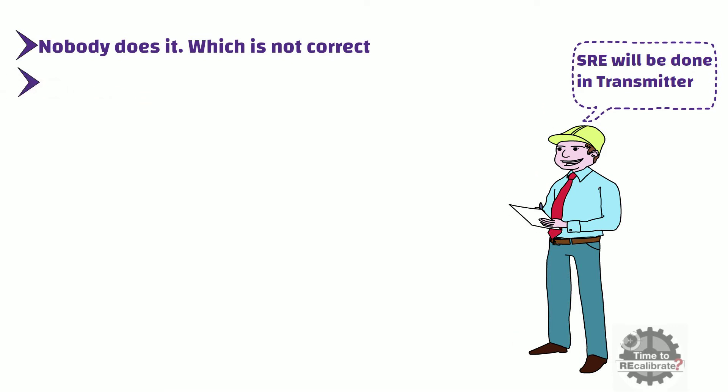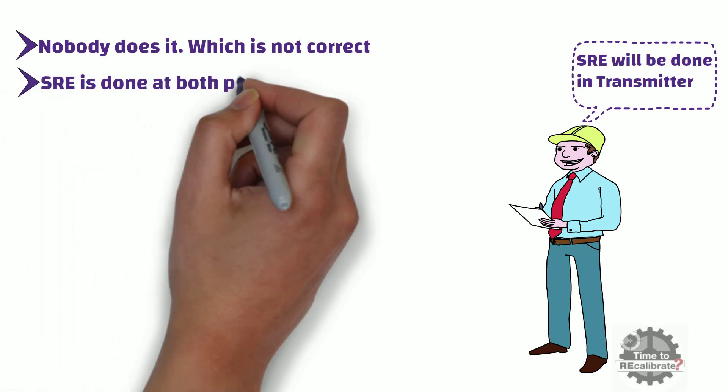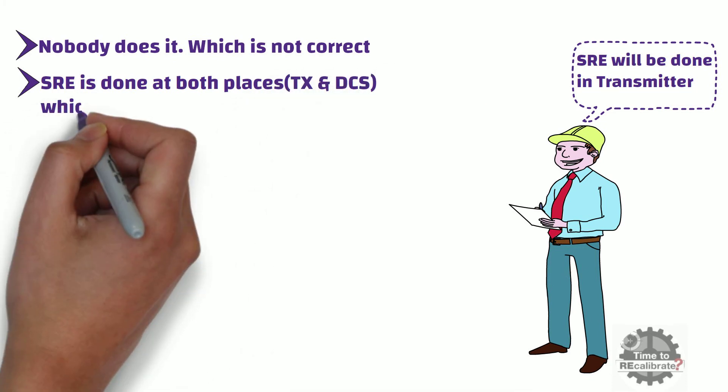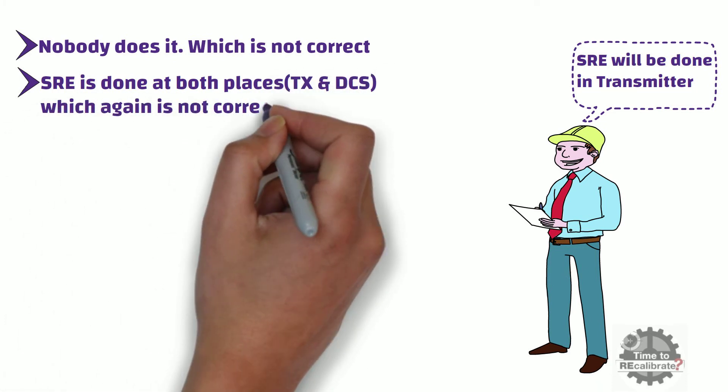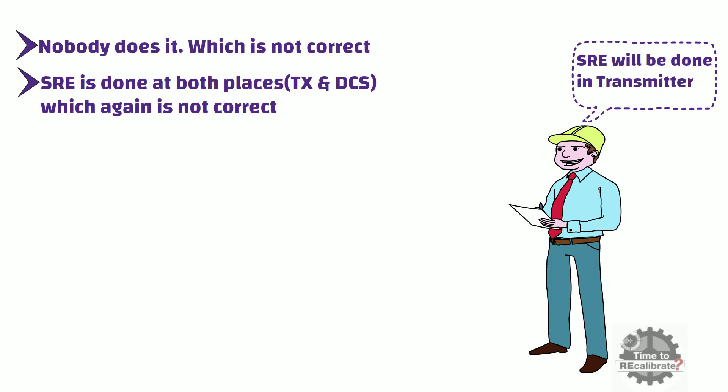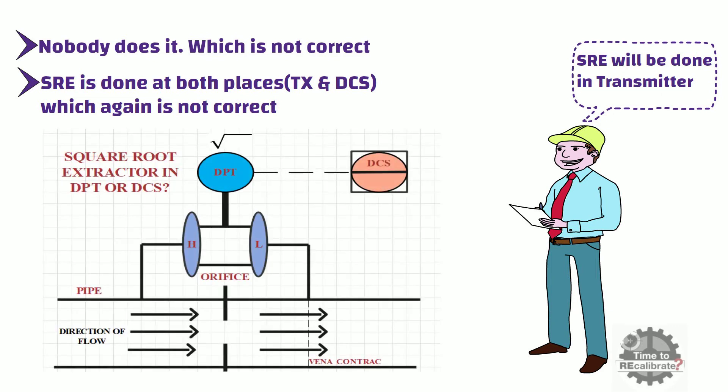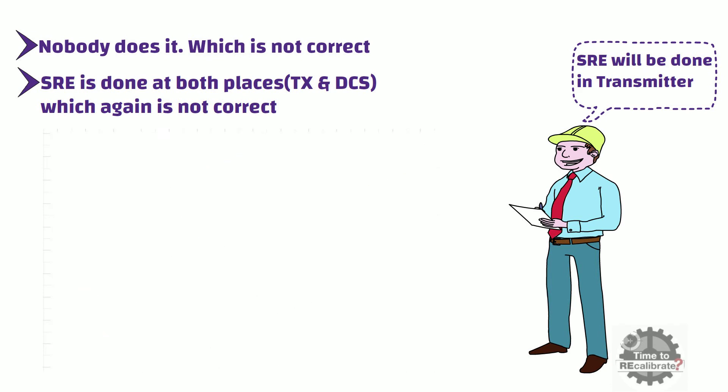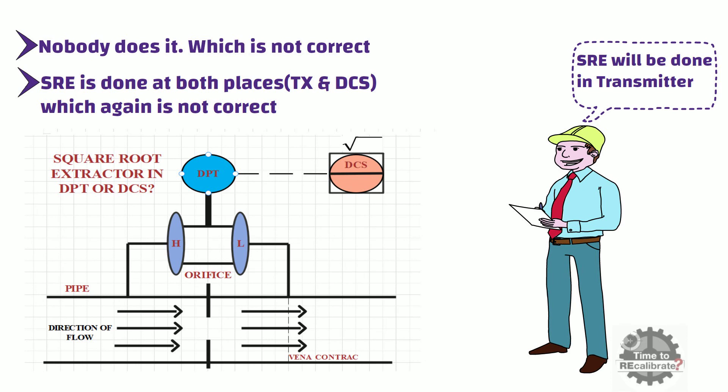Conversely, in some cases, the square root extraction is done at both places, which again is not correct. In an ideal way, square root extraction should be done at one place only. Either square root extraction should be done at transmitter side or it should be done at DCS side, but not both sides.